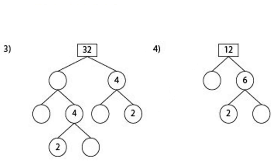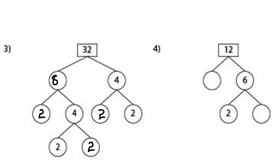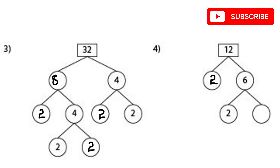Next question is 32. 4 is already written there, so 4 times 8 is 32. Then 8 can be divided into 2 and 4, and 4 can be divided into 2 and 2. So the prime factors of 32 are 2 × 2 × 2 × 2 × 2.